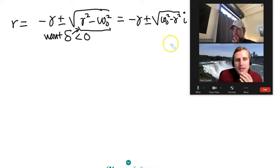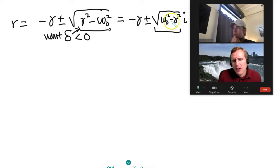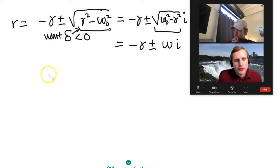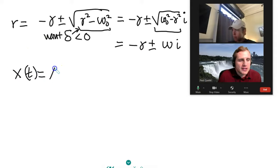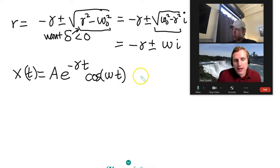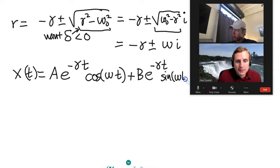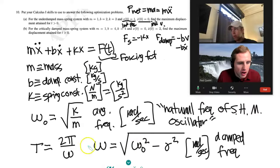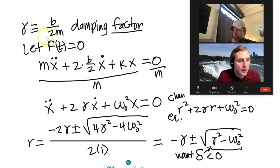We redefine ω = √(ω₀² − γ²), which has units of radians per second. These roots produce the general solution: x(t) = Ae^(−γt)cos(ωt) + Be^(−γt)sin(ωt). The e^(−γt) is the damping factor (real part), while the trig functions handle the oscillating part.